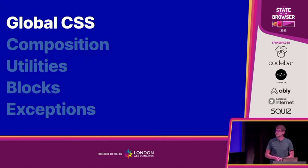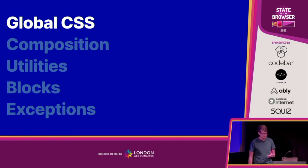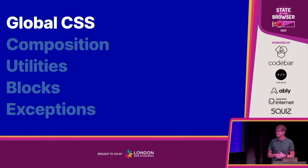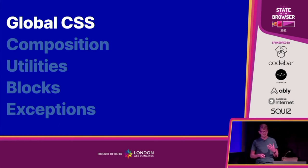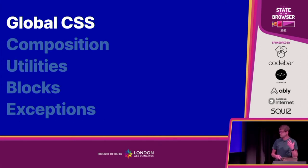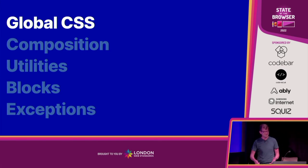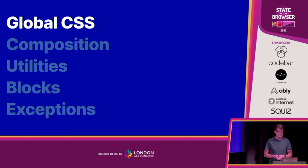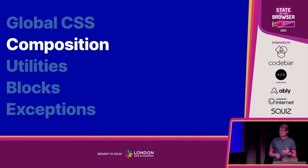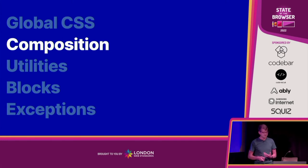The most important part doesn't even feature in the acronym because it wasn't very good branding — and that's global CSS. CSS is an incredibly powerful programming language that lets you set things as high up as possible, then use cascade, inheritance, and specificity to write as much CSS as high up as possible and let the browser do its work.